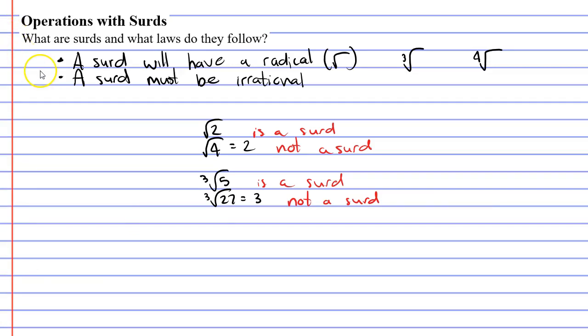Anyway, I didn't want to just define what a surd is, but I also want to talk about some of the laws that they follow. I'm just going to talk about two of these laws. The first one involves multiplication. Let's say we have the square root of three and multiply it by the square root of five. We can simply go three times five, which is 15, and simplify this to the square root of 15.